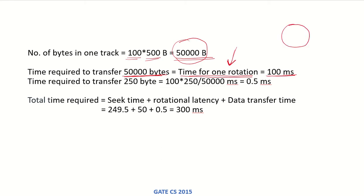The time required to transfer 250 bytes is 100 × 250 / 50,000, which gives 0.5 milliseconds. The total access time is the average seek time (249.5ms) plus the average rotational latency (50ms) plus the data transfer time (0.5ms), giving a total of 300 milliseconds.